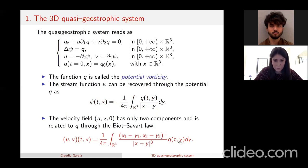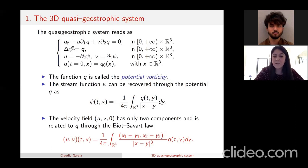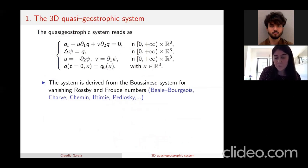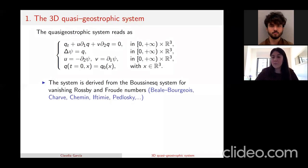Although the third component of the velocity field is vanishing, u, v and also the potential vorticity q and psi all strongly depend on the third variable and we cannot forget about it. This model models large-scale fluid with rapid background rotation — we can think of the rotation of the Earth — and strong stratification. The system is derived from the primitive equations, for example the 3D Euler equation presented in the previous talk.